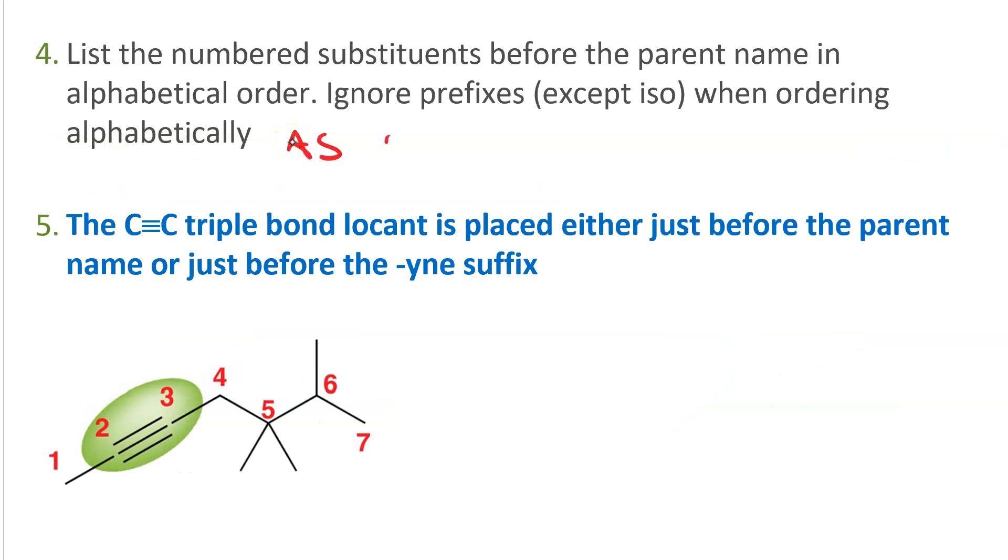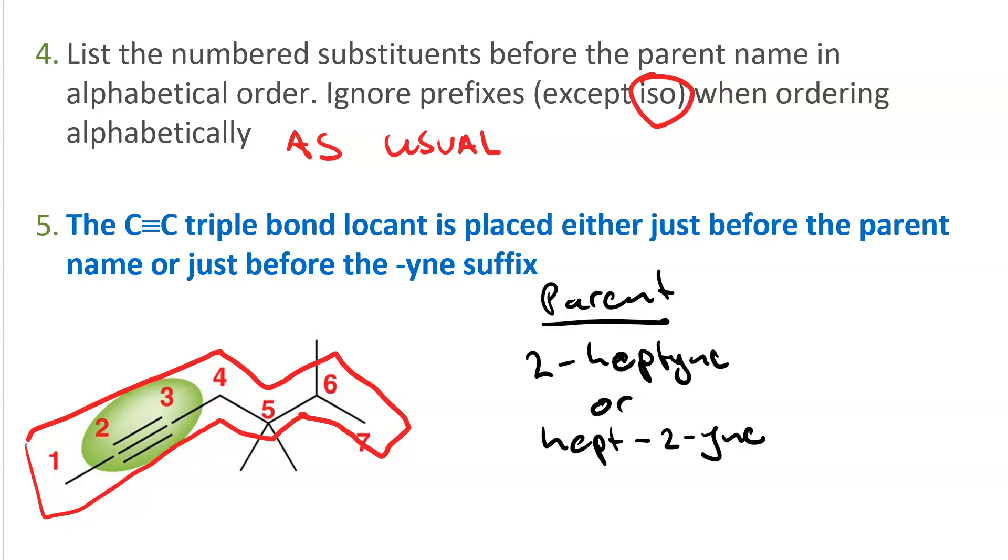Step four is just as usual with naming. You list the numbered substituents before the parent name in alphabetical order, and you ignore all the prefixes unless they are iso when you're ordering alphabetically. And the C-C triple bond locant is placed before the parent name or before the -yne suffix. So, here the parent is either 2-heptyne or the parent is hept-2-yne.